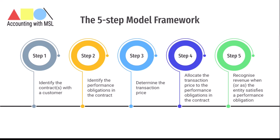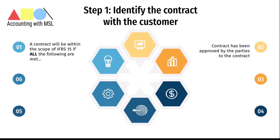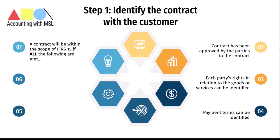Under step one, a contract will be within the scope of IFRS 15 if all of the following conditions are met. First, the contract has been approved by the parties to the contract. Second, each party's rights in relation to the goods or services to be transferred can be clearly identified. Third, the payment terms for the goods or services can also be clearly identified. Fourth, the contract should have commercial substance. And finally, it should be probable that the consideration to which the entity is entitled in exchange for the goods or services will be collected.